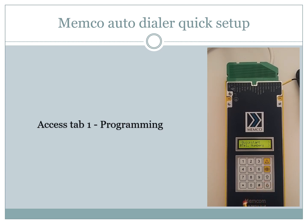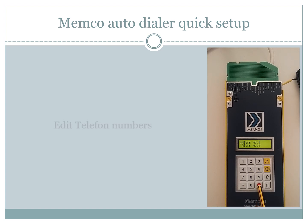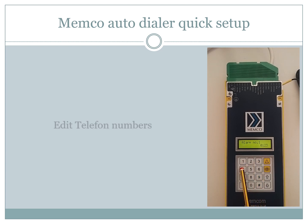In this tab we will select telephone numbers by pressing the H key. Here we will access alarm number one by pressing H key again. We will input the phone number that needs to be called in case of emergency, then press H key again.